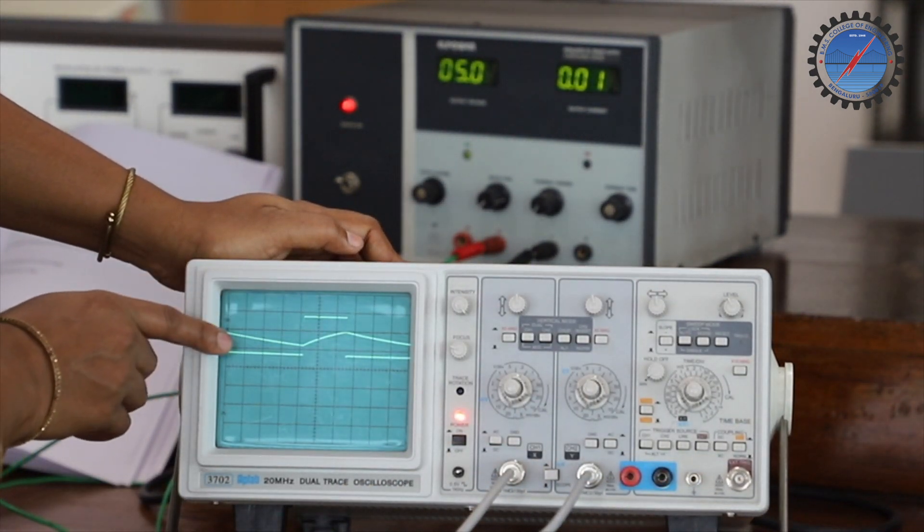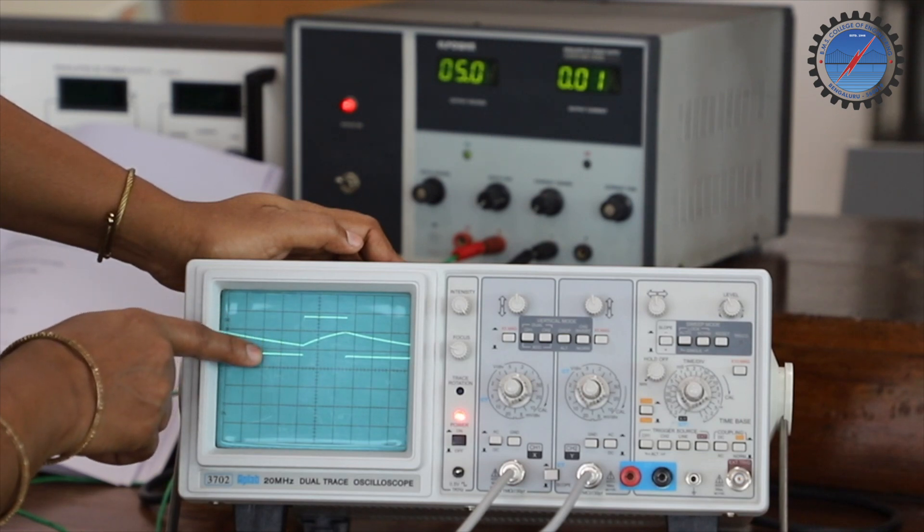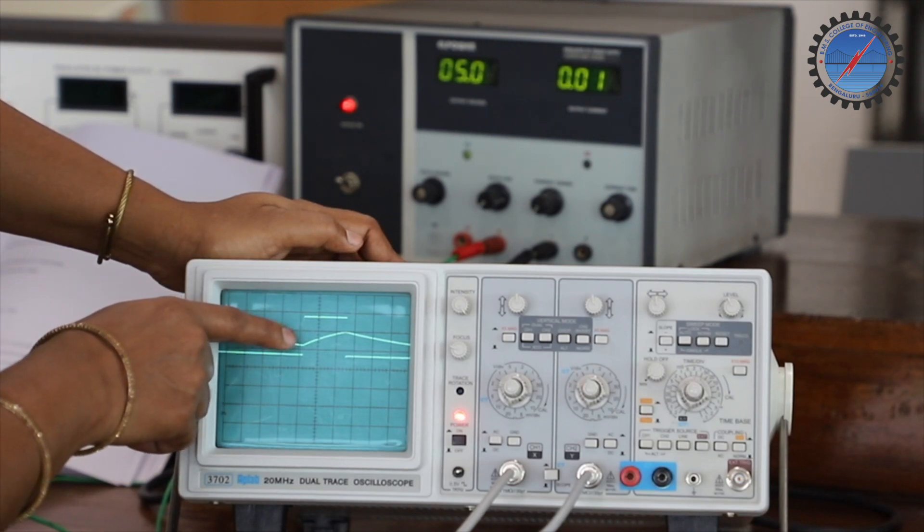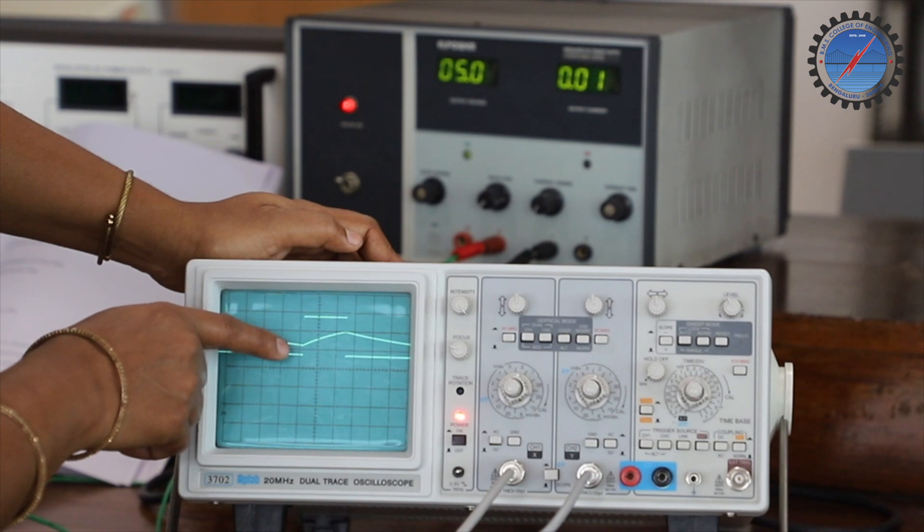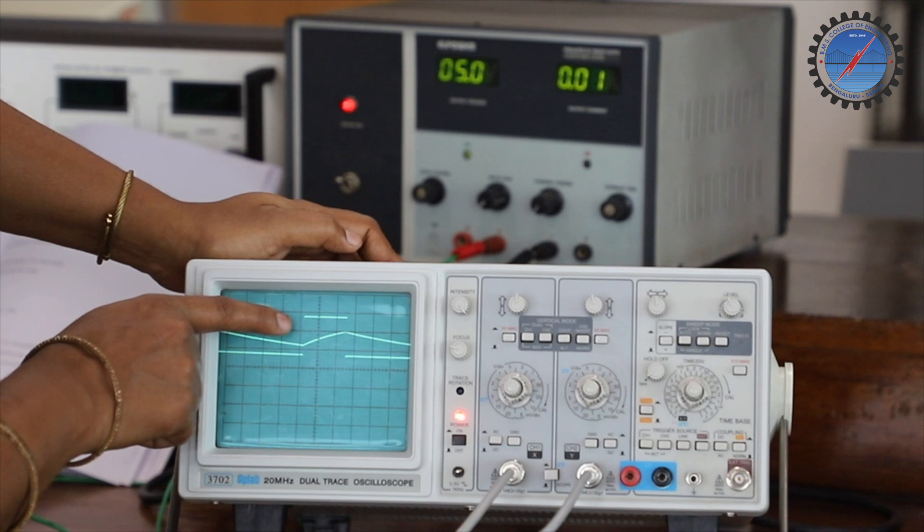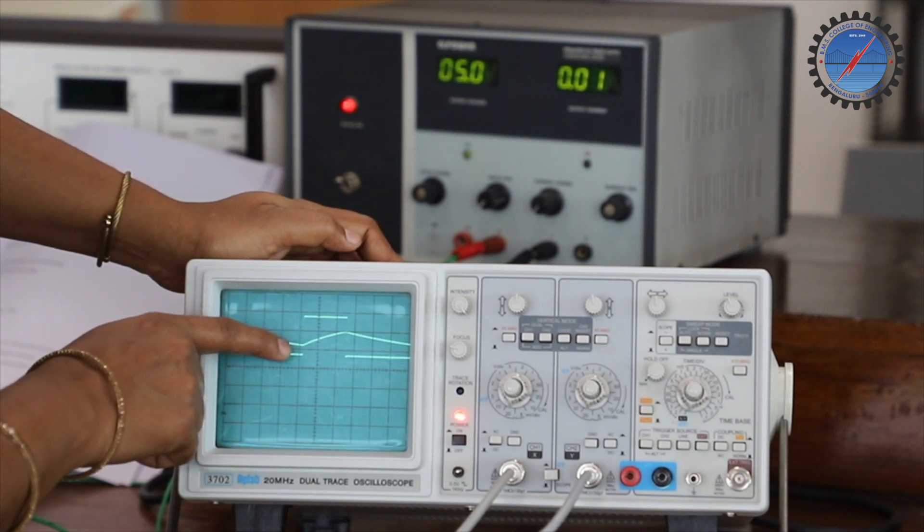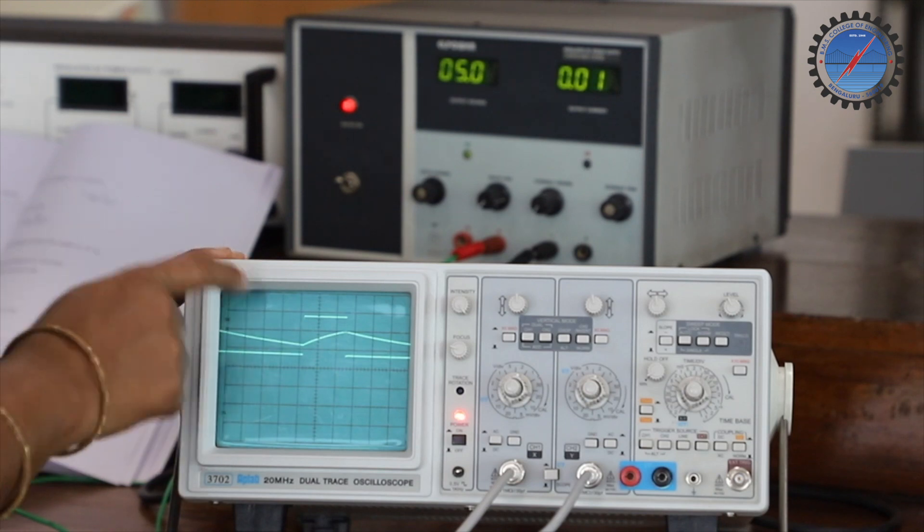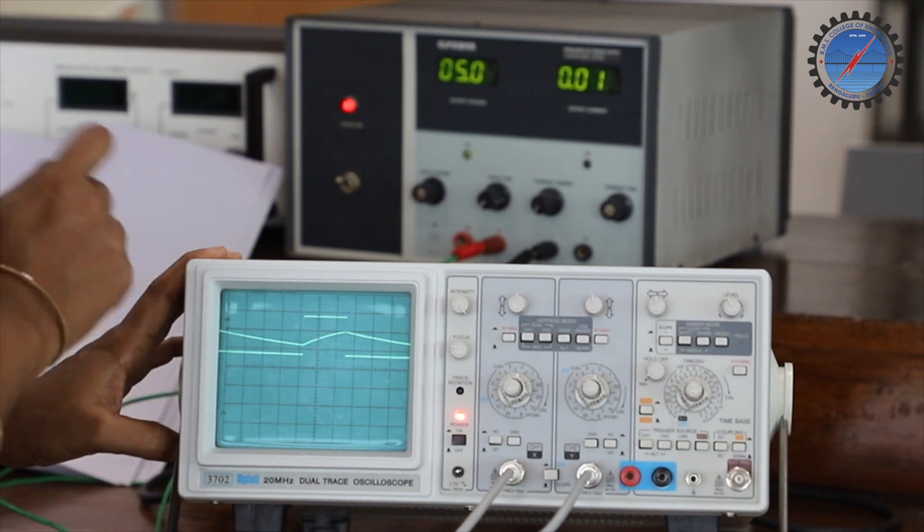Here we have both waveforms: the output waveform and charging-discharging value across the capacitor. You have to note down from this reference line the potential point at which the capacitor reaches one-third of VCC, and practically how much two-thirds of VCC you are getting.